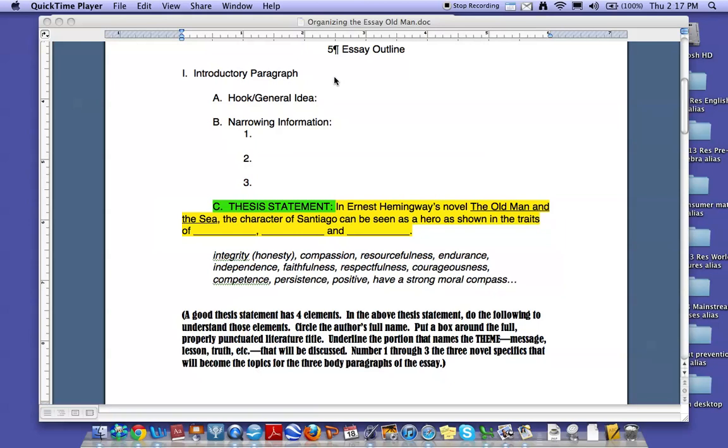We're going to continue our writing of the five-paragraph essay by focusing on the thesis statement. You'll note that it is the last statement in your first paragraph. Picture your hourglass. This is the last statement in that first part that started broad and ended narrow.